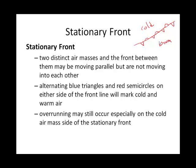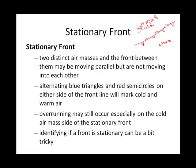With a stationary front, we can get overrunning, especially on the cold air mass side. Sometimes you'll see precipitation on radar as a result. Identifying a stationary front can be tricky, partly because meteorologists have their own sense of where to draw these front lines in the first place.